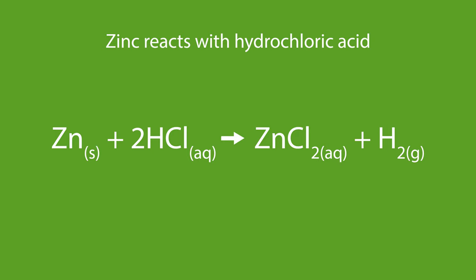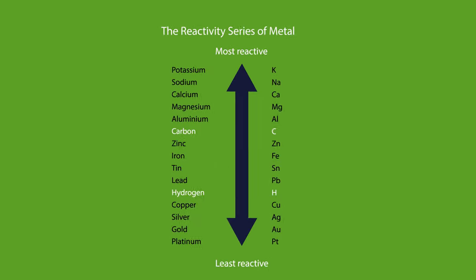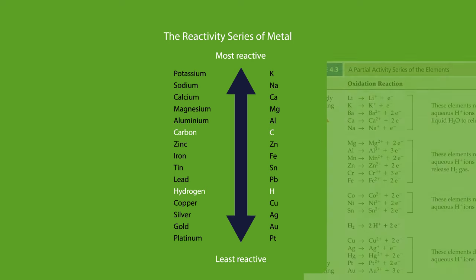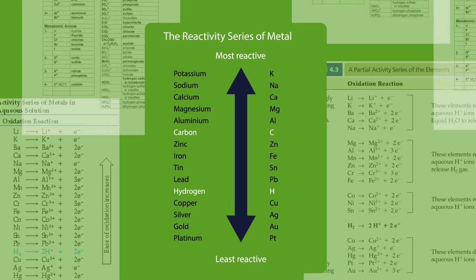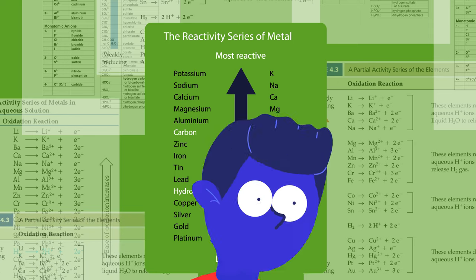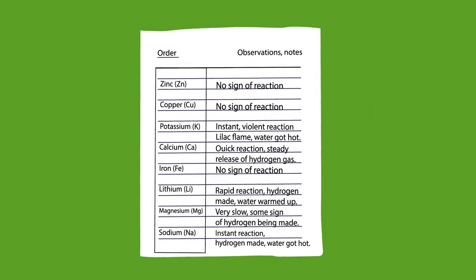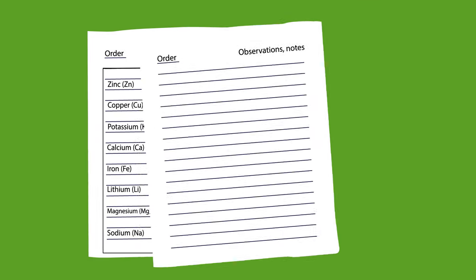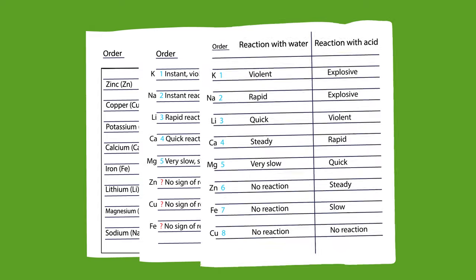Whereas when zinc reacts, Zn will form its ion Zn²⁺, but less readily than potassium does. So the reactivity series is also a list which shows the tendency for metals to produce their positive ions. Don't panic — you don't have to remember this list. You should however be able to rank metals if given results of an experiment.